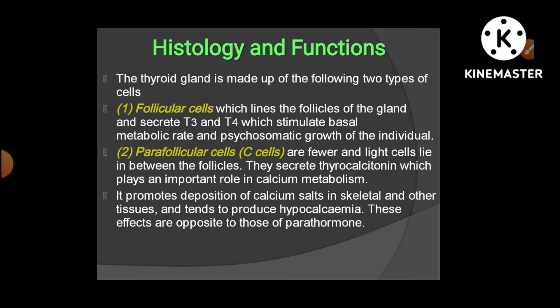The thyroid gland is made up of two types of cells: follicular cells and parafollicular cells. Follicular cells line the follicles and secrete T3 and T4, which stimulate BMR and psychosomatic growth. Parafollicular cells, also known as C cells, are fewer in number and lie between the follicles; they secrete calcitonin, which plays an important role in calcium metabolism. Calcitonin promotes deposition of calcium salts in skeletal and other tissues, tending to produce hypocalcemia — effects opposite to those of parathormone, which causes hypercalcemia.